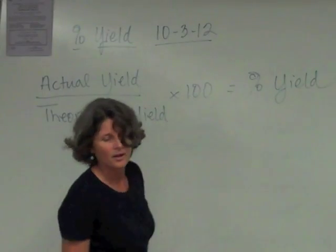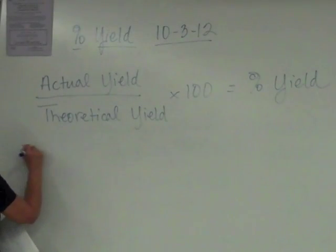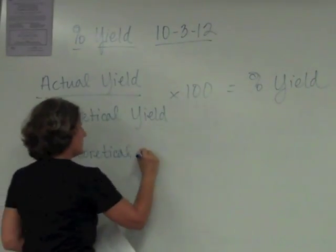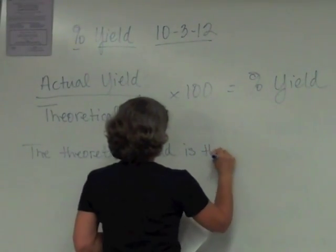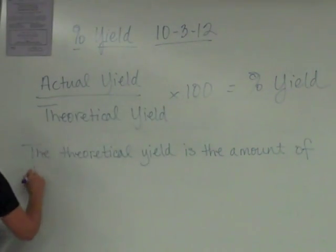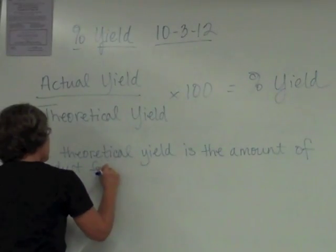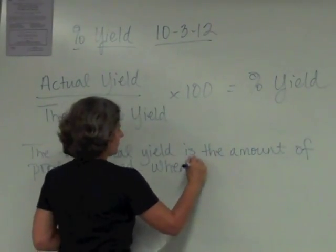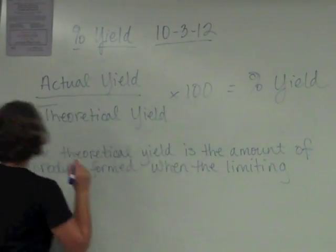Let's write some things down here. The theoretical yield is the amount of product formed when the limiting reactant is completely consumed.